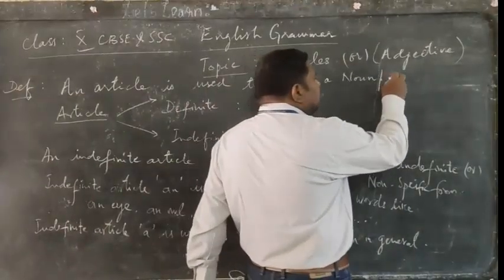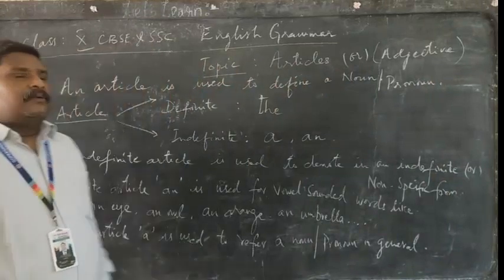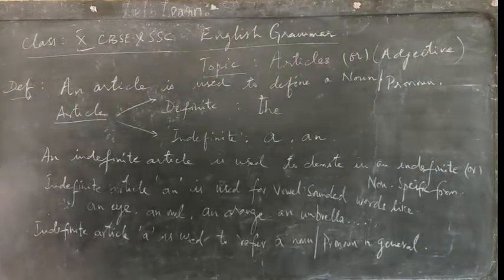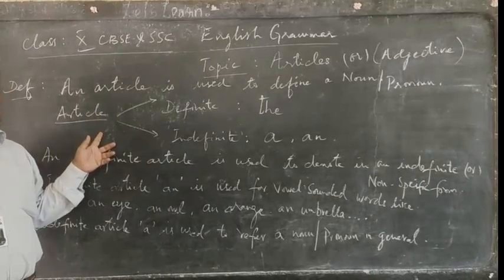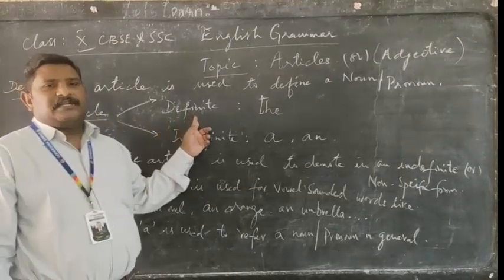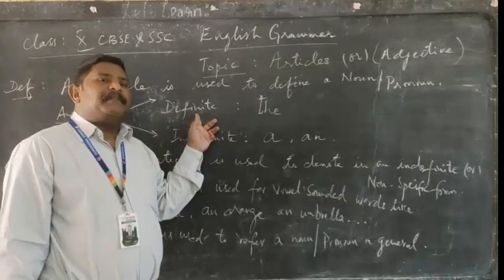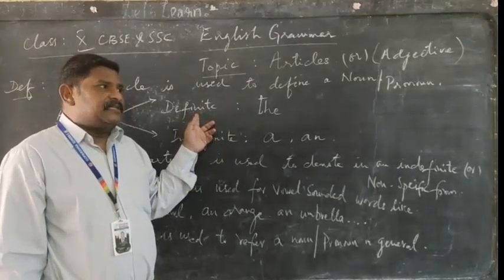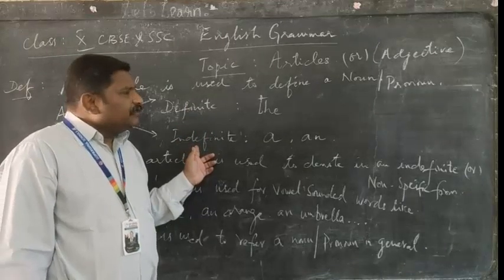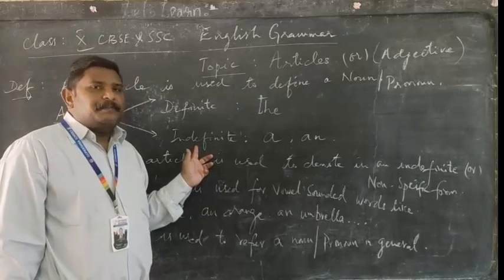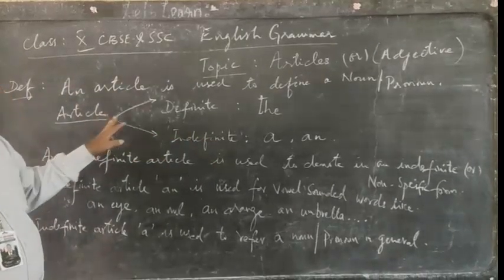An article is used to define a noun or a pronoun. Articles are classified into two categories: definite articles and indefinite articles. Definite means which are specific — a particular article. Indefinite article means which is non-specific, which is not particular. That is the meaning of these two categories.